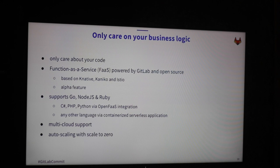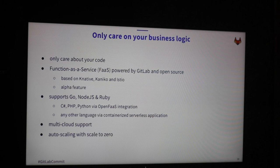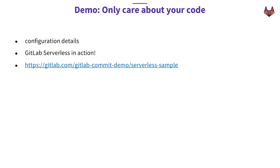GitLab serverless supports Go, Node.js, and Ruby. With the OpenFaaS integration you can also use C#, Python, and PHP. But basically you can use any language - you just need to provide a Dockerfile with information on how to build the application, and then you can use any language you want. Because it's completely open source and running in Kubernetes, you have multi-cloud support, can deploy to any cloud, and you have auto-scaling including scaling to zero. If a function isn't used, the whole application scales down to zero, and when it gets a request it scales up as much as needed.